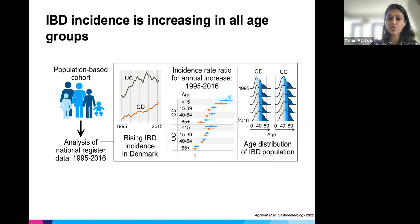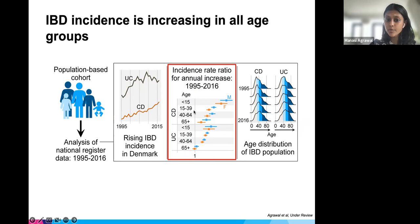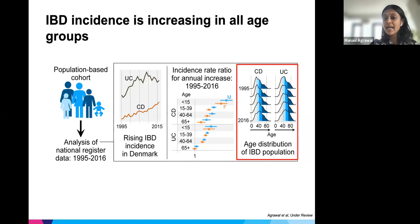IBD incidence has been increasing in all age groups. We conducted a population-based cohort study using register-based data in Denmark over a 20-year period and found that IBD incidence is continuing to rise. Both for Crohn's disease and ulcerative colitis, incidence is increasing across pediatric, young adult, older adult, and elderly age groups, and the age distribution of the IBD population is also shifting as these individuals tend to get older.